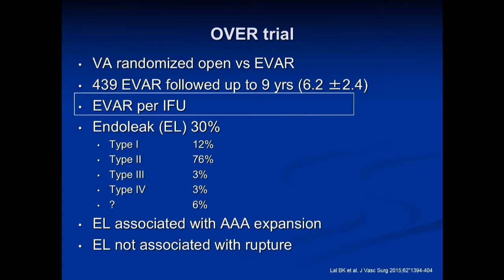If you look at the data from the OVER trial — the VA randomized trial comparing open versus endovascular repair — they had follow-up up to nine years. All of these EVARs were implanted per the IFU by the individual manufacturer. They noticed a 30% risk of endoleak; most were type 2, the next most common was type 1, and then a couple of type 3s and some undefined. They did find that endoleak was associated with aneurysm expansion, but could not find an association with rupture. This might just be a statistical curiosity, because most patients who have type 1 and type 3 endoleak, or even type 2 who are enlarging, do get repaired by the investigators.